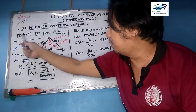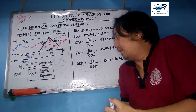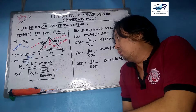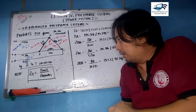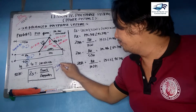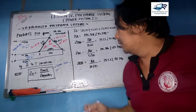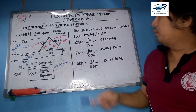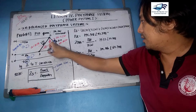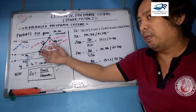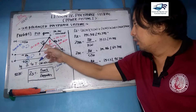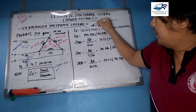Looking at the Y-connected impedances with negligible transmission line impedances, recall the main formula: Z-delta equals the numerator constant divided by the opposite Y-connected impedance. The numerator constant K is the cumulative sum of all admittances connected in Y — specifically ZB×ZA + ZA×ZZ + ZZ×ZB.